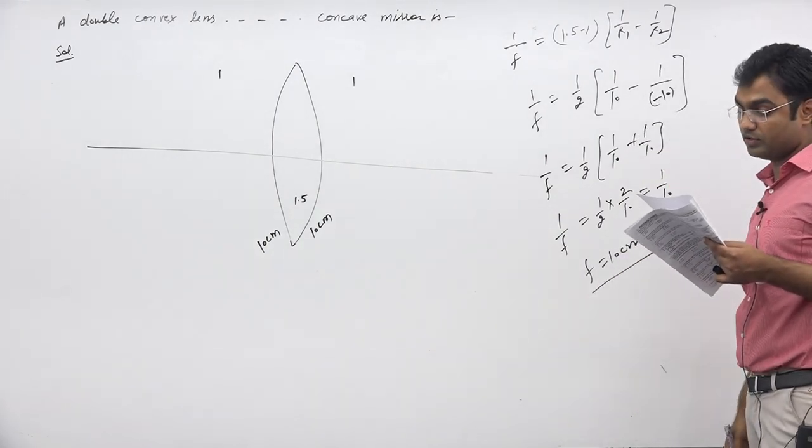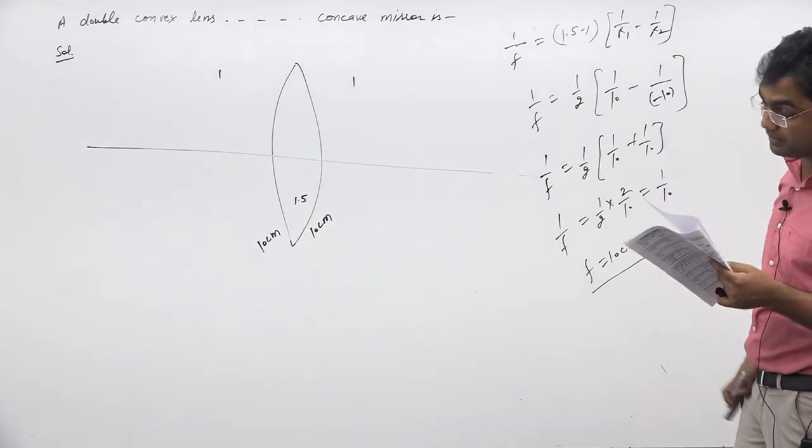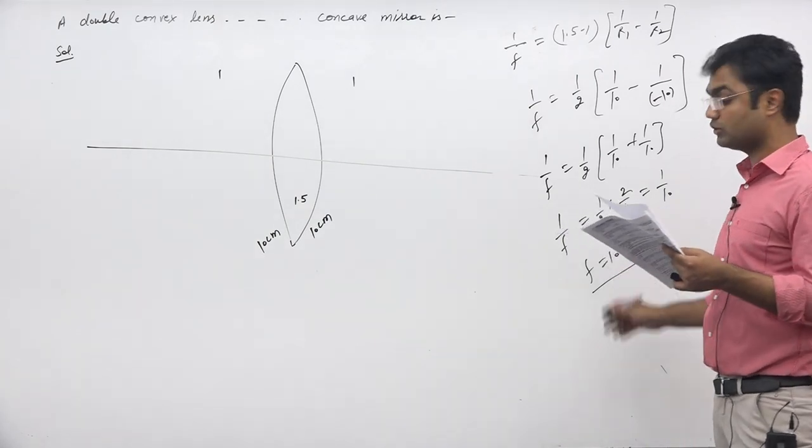The radius of curvature of the concave mirror, having a focal length equal to the focal length of the lens, so its radius of curvature will be double, which is 20 centimeters.